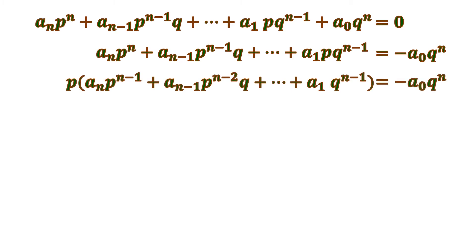Next, we factor out p from the left side. The first term aₙpⁿ becomes aₙpⁿ⁻¹, the second term becomes pⁿ⁻², and so on, because one p is taken out as a common factor. This gives: p(aₙpⁿ⁻¹ + aₙ₋₁pⁿ⁻²q + …) = −a₀qⁿ. Since −a₀qⁿ equals p times that whole expression, p divides −a₀qⁿ.